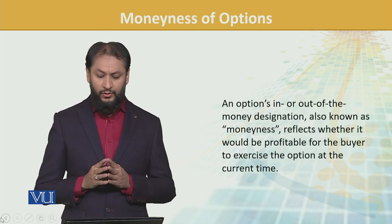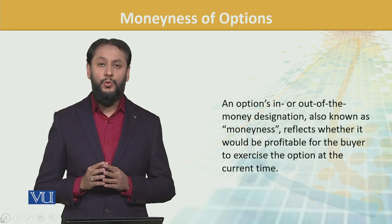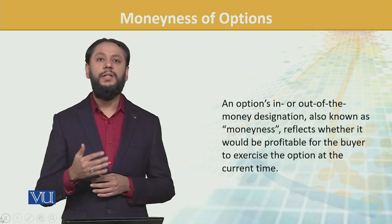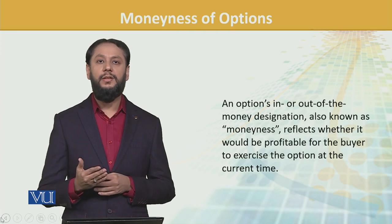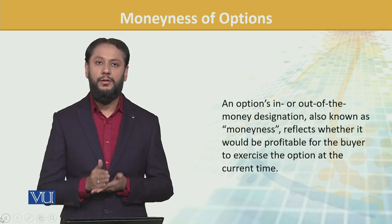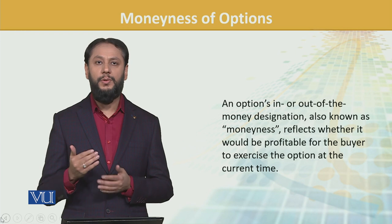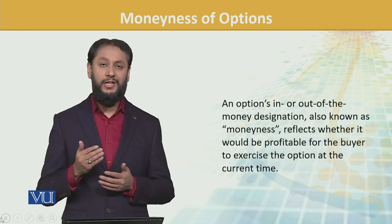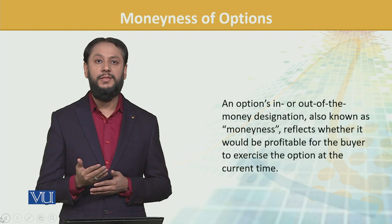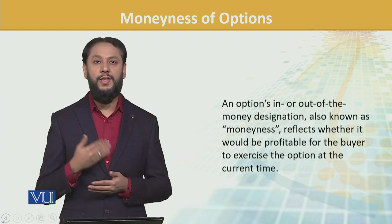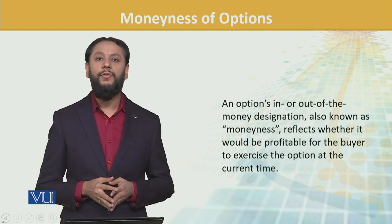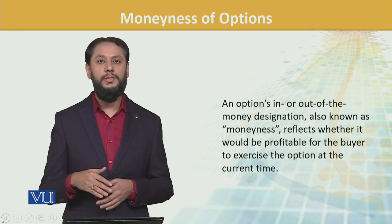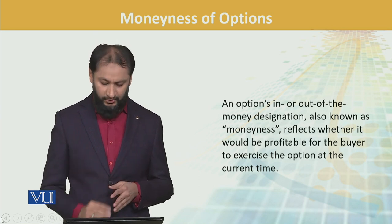An option's in-the-money or out-of-the-money designation is known as moneyness. It is said that the moneyness of the option tells us what level it is at — is it at the money, out of money? This is gauged by whether it would be profitable to exercise. If it is financially beneficial to exercise right now, that is in the money. If it is not profitable, then that is out of the money.